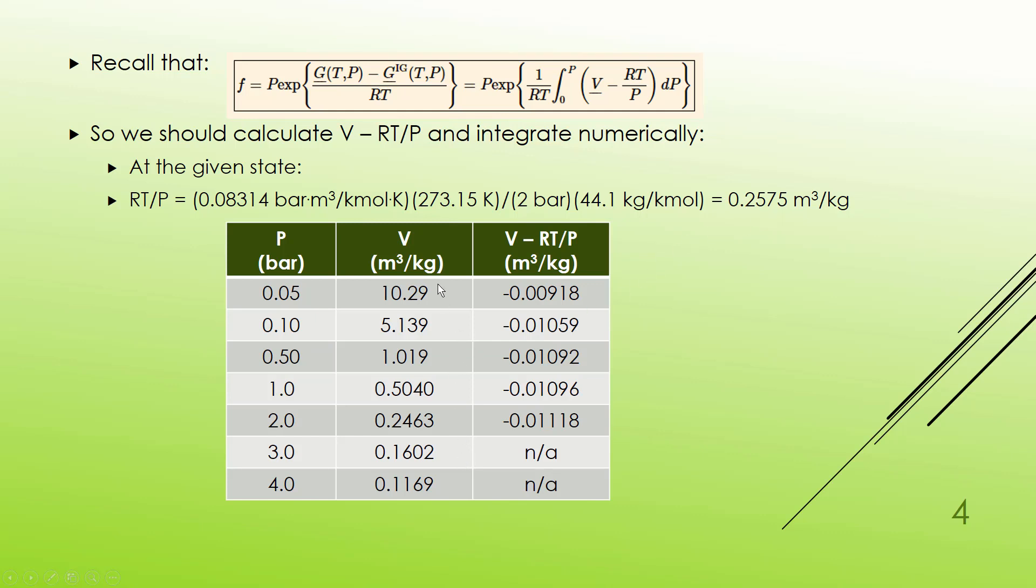If you then use this with these values of V from the table, I get V minus RT over P. And I did those calculations. But notice I stopped at 2 bar because I really don't need the ones for higher pressures because the integration only goes up to the pressure I'm trying to calculate.